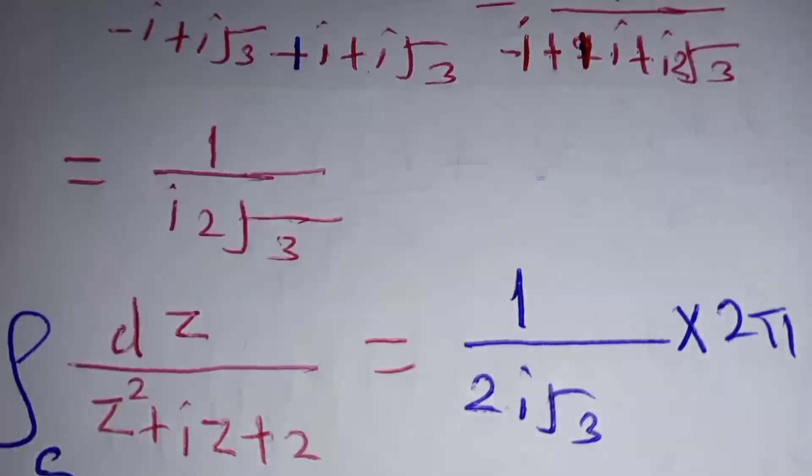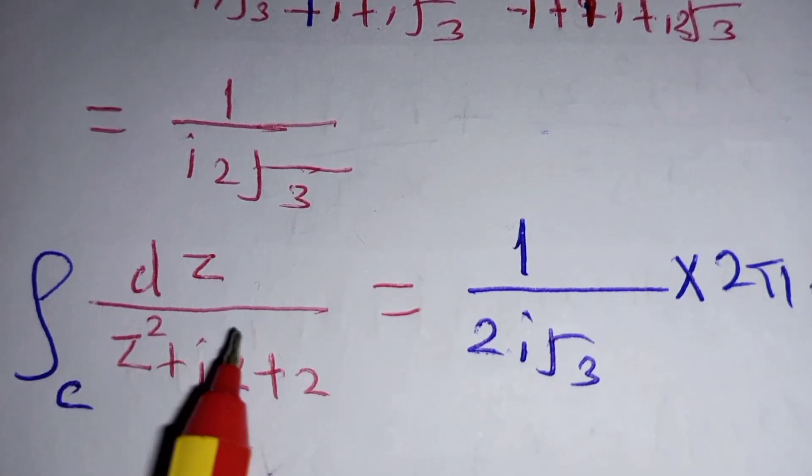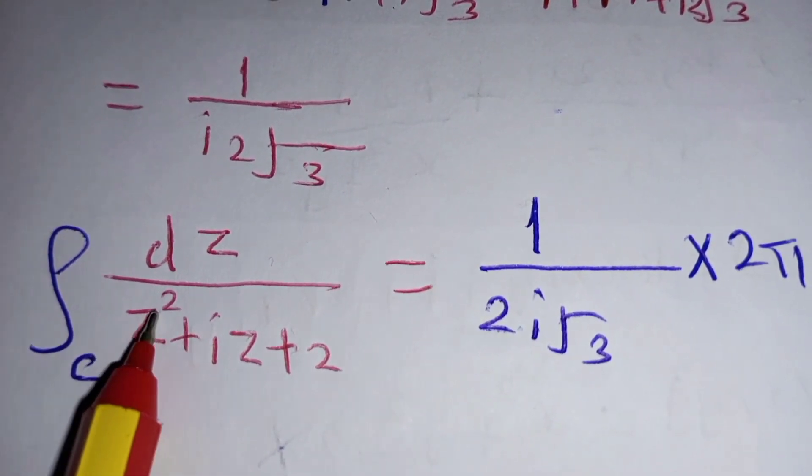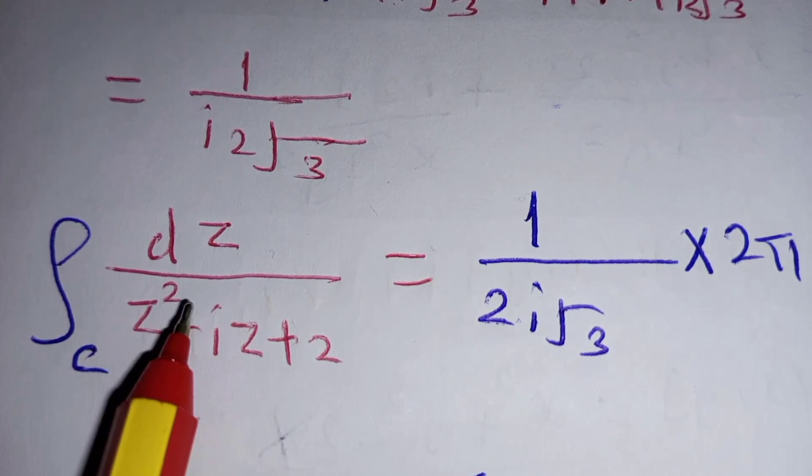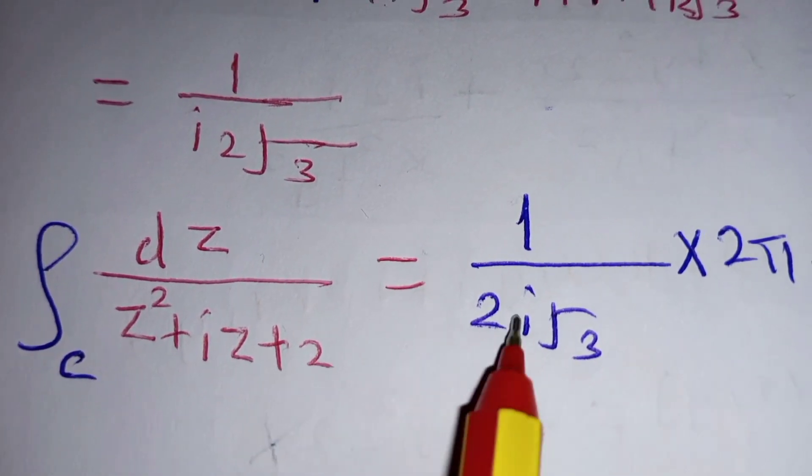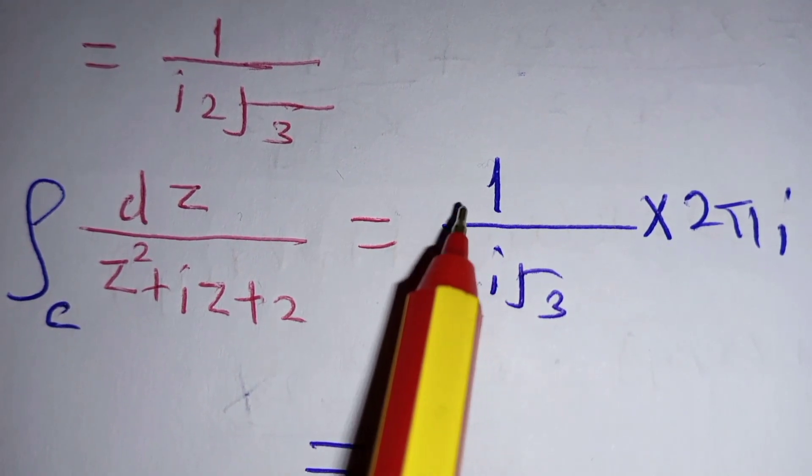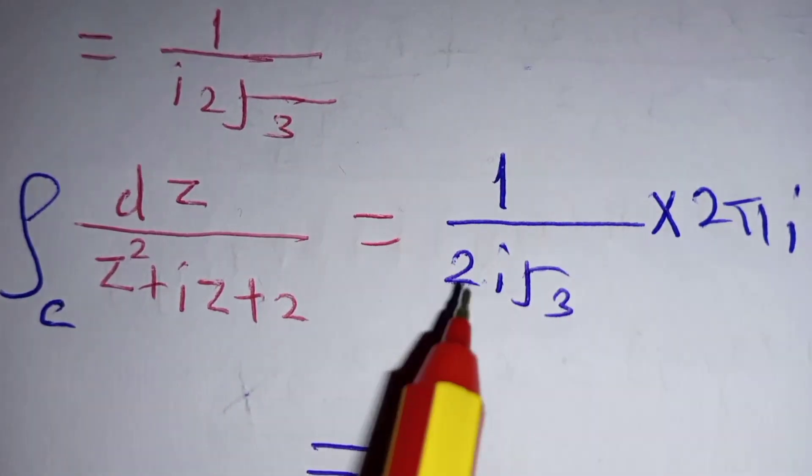So we are going to get the residue. We shall get the residue of z1. Substituting, we are going to have the limit as z tends to negative i plus i root 3, into the bracket z minus negative i minus i root 3.